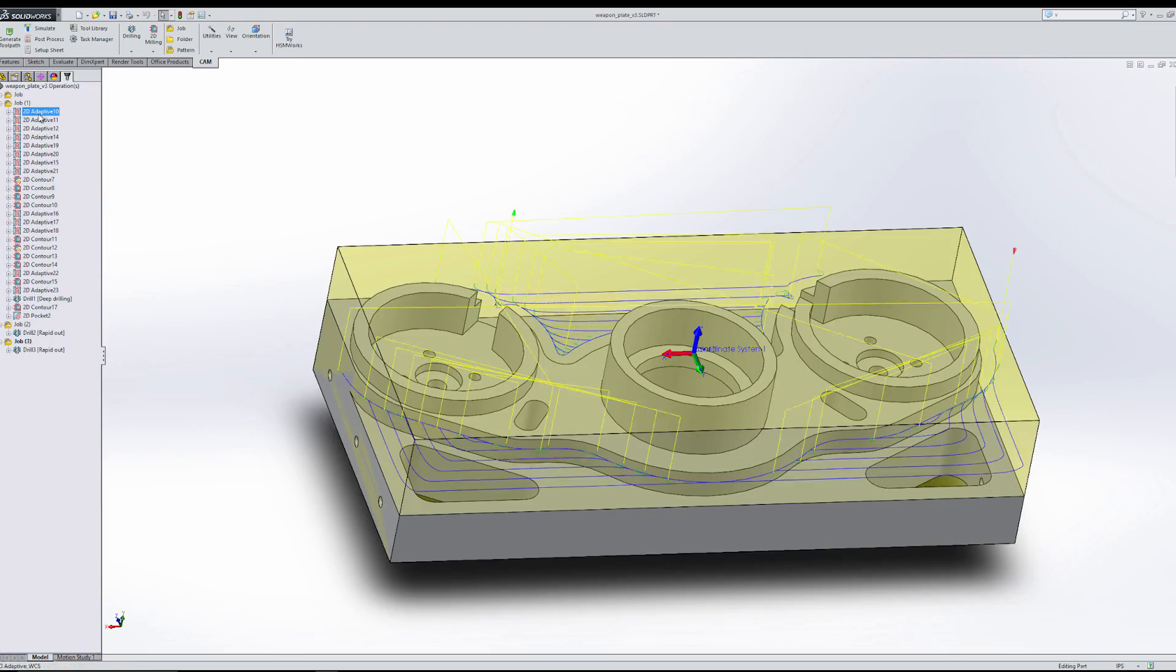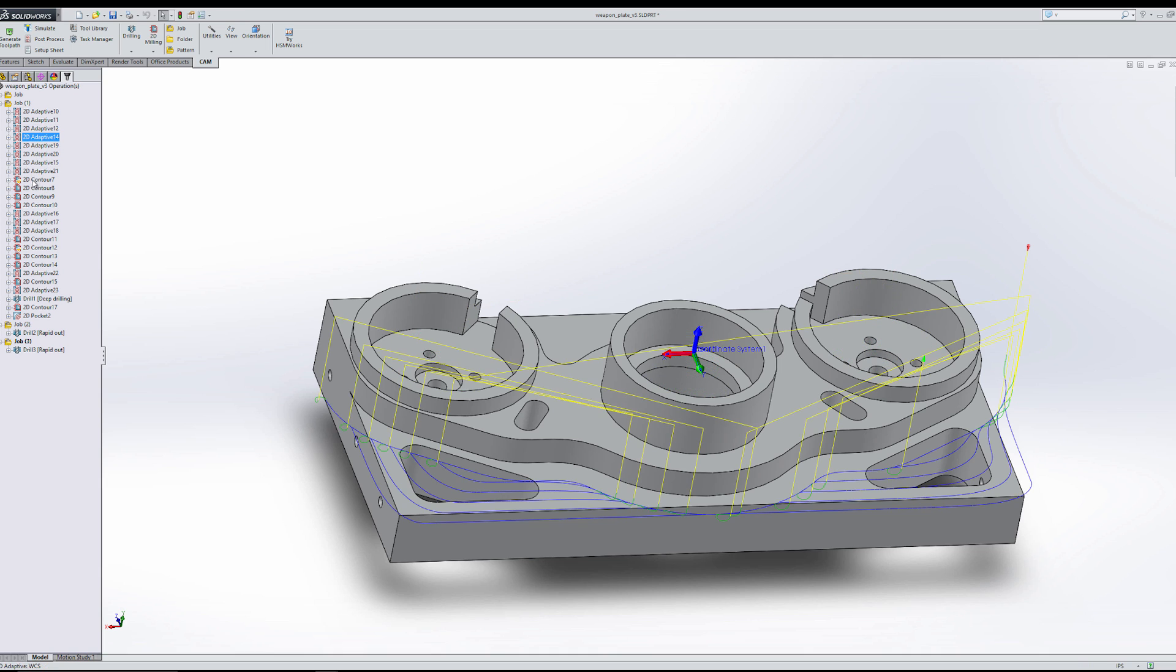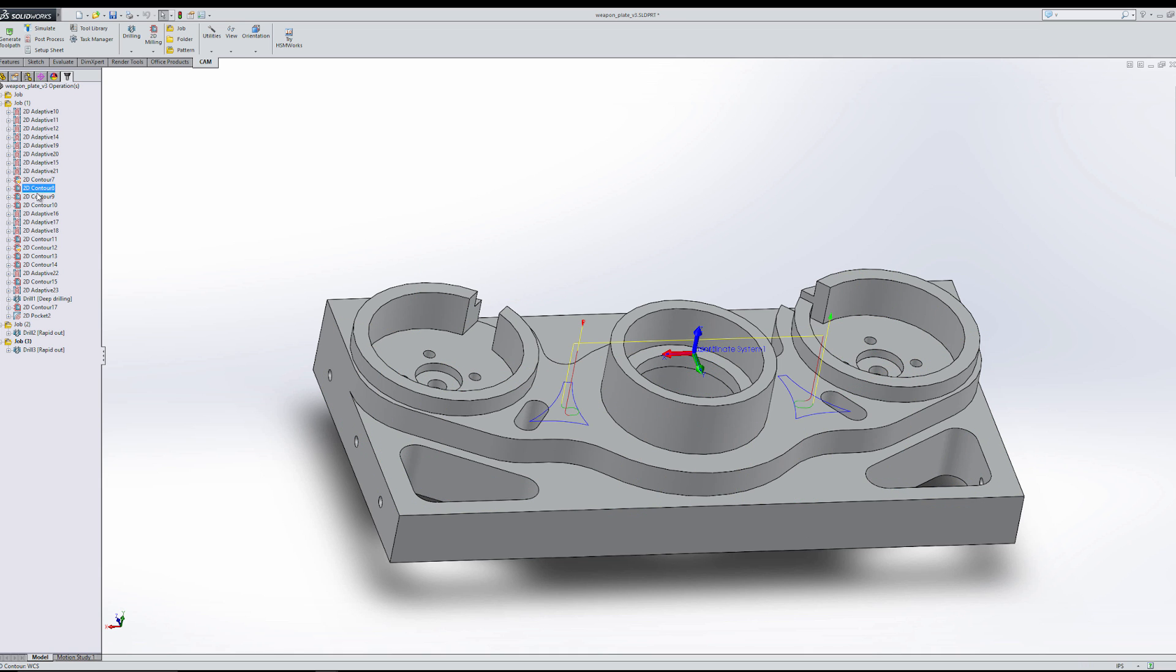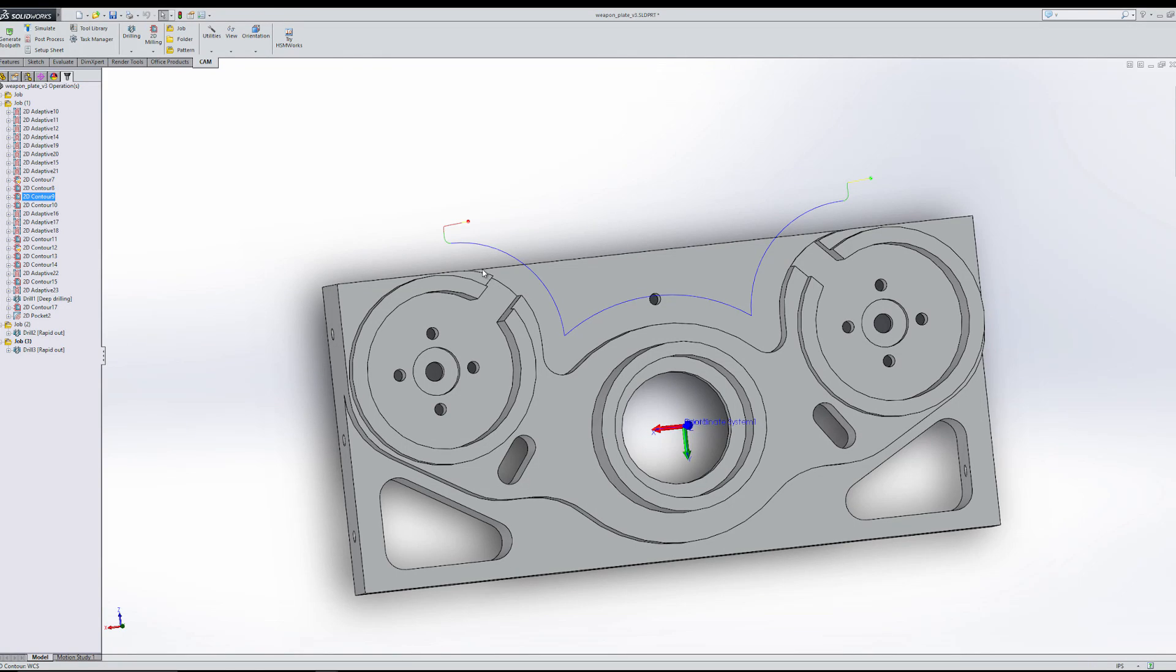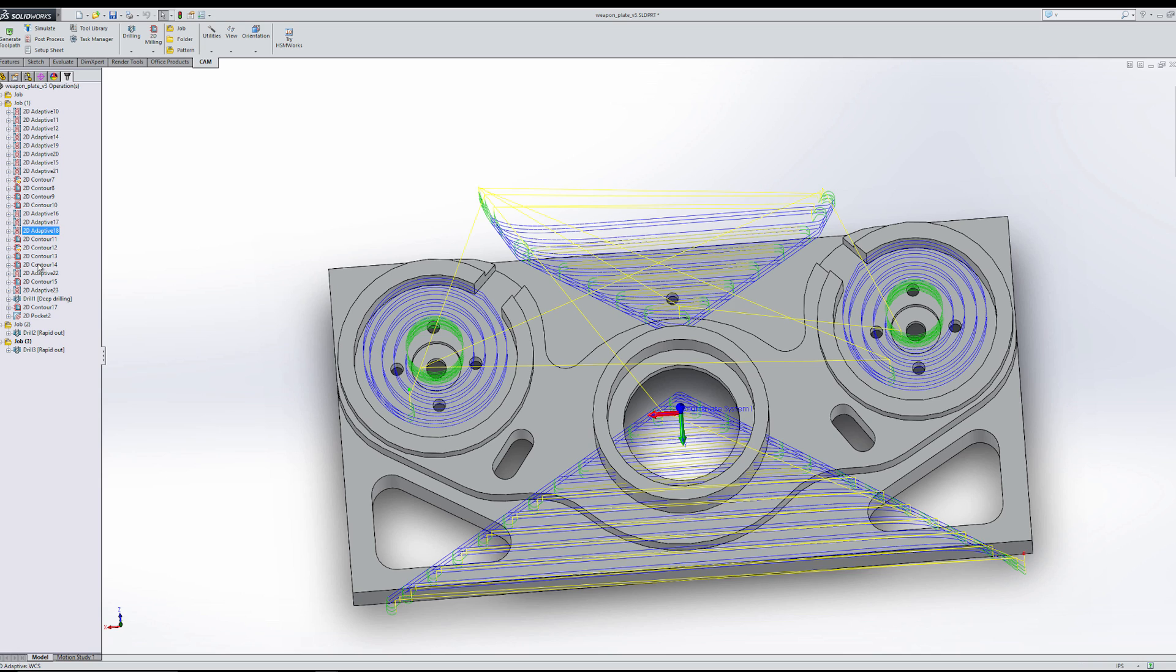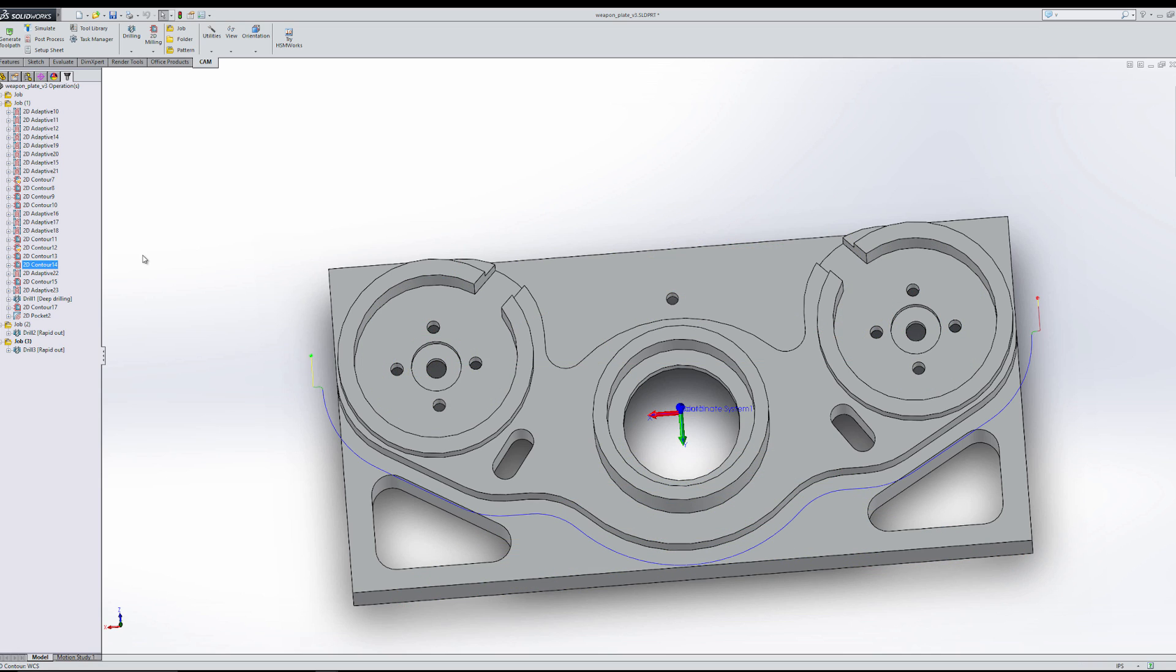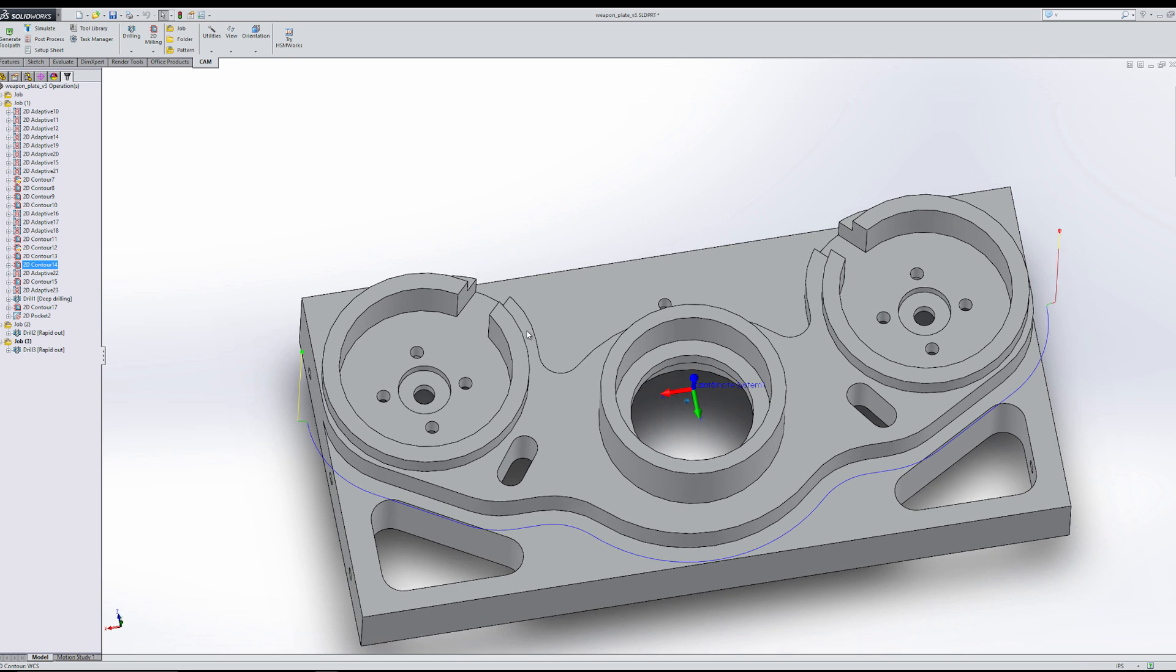I've got a lot of adaptive clearing on here and then a lot of contours later just to clean up some of the things that the adaptive can't get, like cleaning up this edge, cleaning up the inside of here, things like that. So, it's pretty basic CAM. I'm really only using two different mills. I'm using the shear hog and then the quarter inch end mill to go and clean it up.